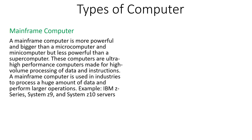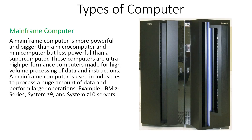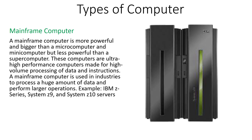They are more powerful computers than the mini and micro computers, capable of performing large calculations in organizations or industries. The examples of mainframe computers are the IBM Z series, System Z9, and System Z10 servers. These mainframe computers are more powerful than mini and micro computers, however less powerful than the super computer.